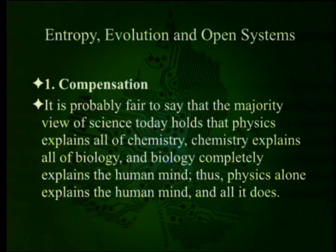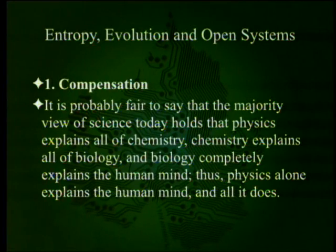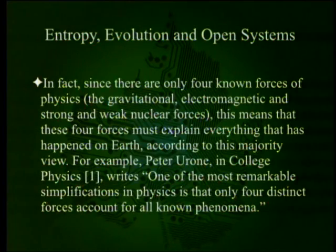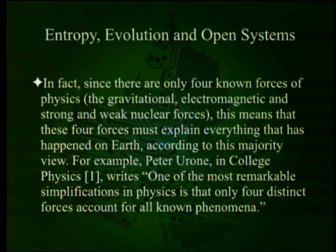Section one: Compensation. It is probably fair to say that the majority view of science today holds that physics explains all of chemistry, chemistry explains all of biology, and biology completely explains the human mind. Thus physics alone explains the human mind and all it does. Since there are only four known forces of physics — the gravitational, electromagnetic, strong, and weak nuclear forces — this means that these four forces must explain everything that has happened on earth, according to this majority view.